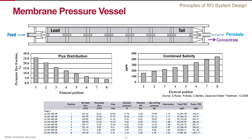In actual RO systems, the flow distribution in a vessel is uneven. The first membrane element usually produces about 25 percent — and sometimes even more — of the total vessel permeate flow, while the last elements yield only around 3 to 8 percent of the total permeate. The decline of the permeate production along the vessel is mainly due to the increase in feed salinity, associated with osmotic pressure as the permeate is removed from the vessel.